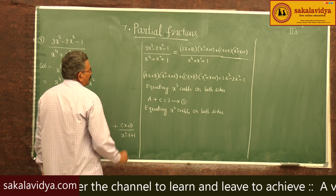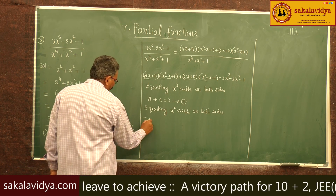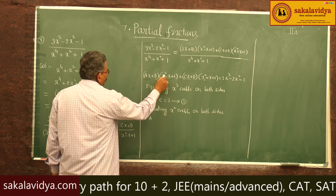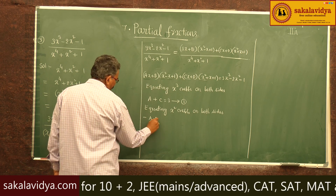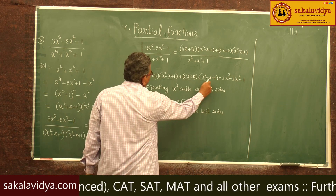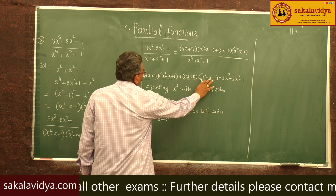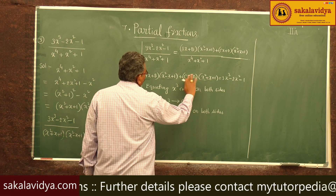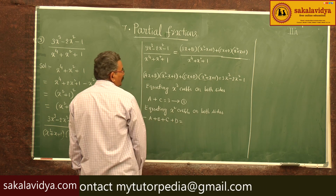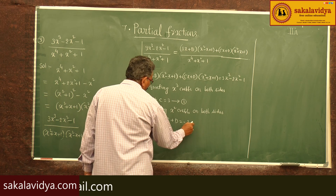For x² terms: ax·(-x) gives -ax², b·x² gives bx², cx·x gives cx², and d·x² gives dx². The x² coefficient equals -2, so -a + b + c + d = -2 — equation 2.